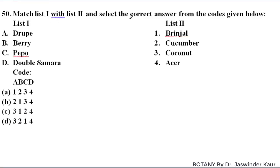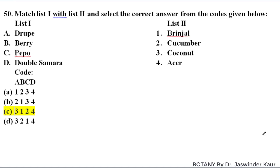Match list one with list two. List one has fruit types and list two has plant species. Drupe is the fruit type of coconut. Berry fruit is present in brinjal. Pepo is present in cucumber. Double samara fruit is present in Acer. The correct option is option C.